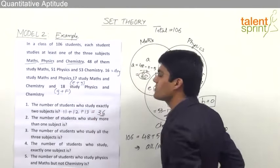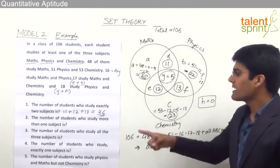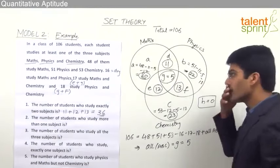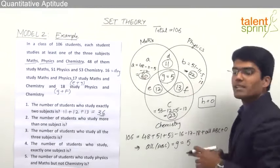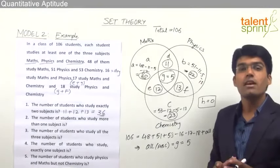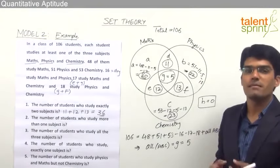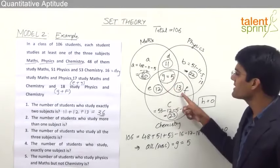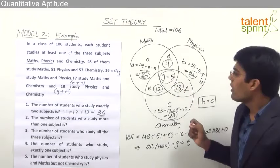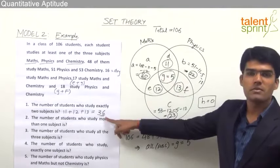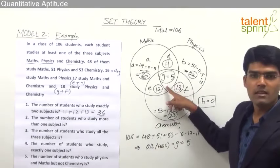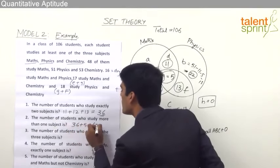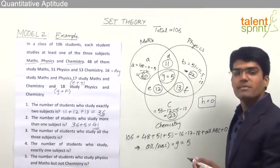Question 2: the number of students who study more than one subject. Regions 20, 22 and 23 represent students studying only one subject each, so those are excluded. More than one subject means regions D, E, F and G — that is, 2 subjects and all 3 subjects. The sum of exactly 2 subjects is 36 from the previous question, so adding 3-subject students: 36 + 5 = 41. Therefore, 41 students study more than one subject.